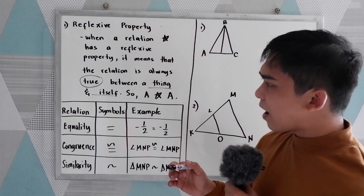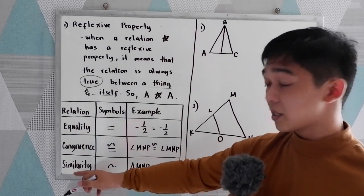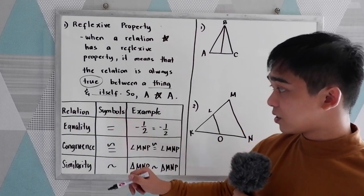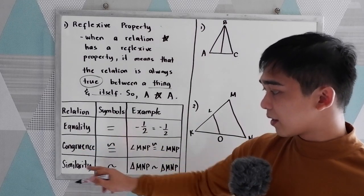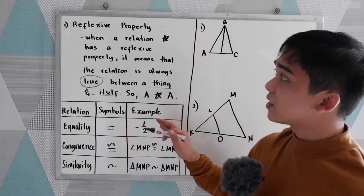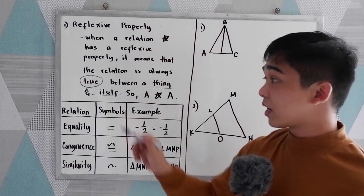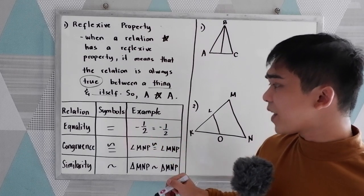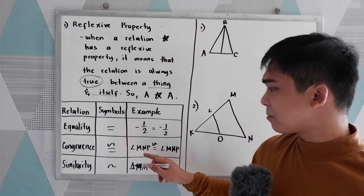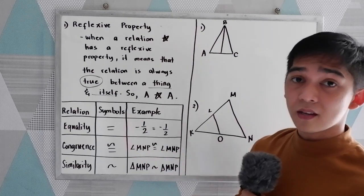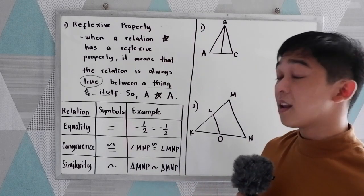Let's have our table. We have the relations: equality, congruence, and similarity, with their respective symbols. To understand the reflexive property: a thing is equal to itself — that is always true. So negative one-half is equal to negative one-half. Angle MNP is congruent to angle MNP. And triangle MNP is similar to triangle MNP. Those are the different relations and examples.